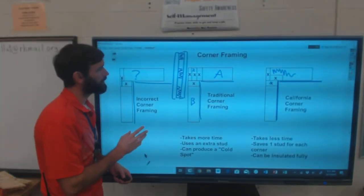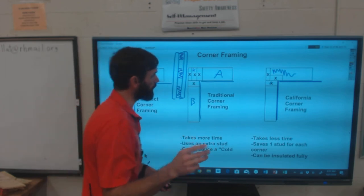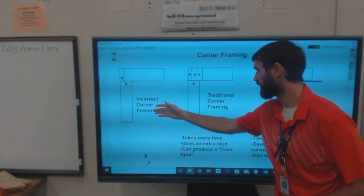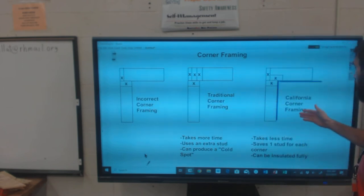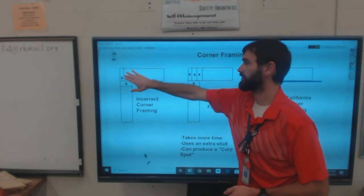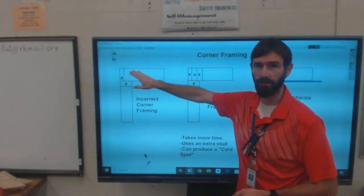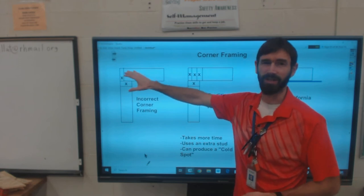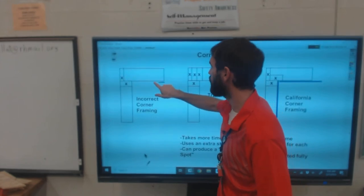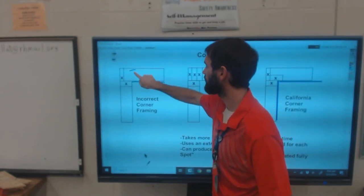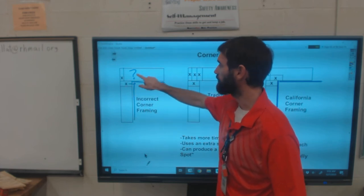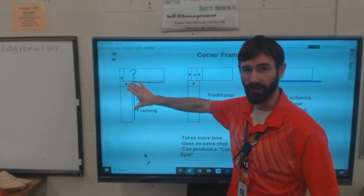There are three different ways to do corner framing. You've got an incorrect way, you've got a traditional corner, and you've got California framing. This one over here is just two end studs that get nailed together. That'll work in a shed, that'll work in a kid's playhouse, not in interior framing, because there is no place to support that piece of drywall that goes over here. This is not a good option.